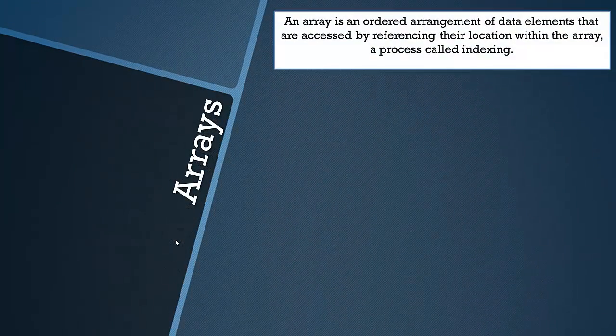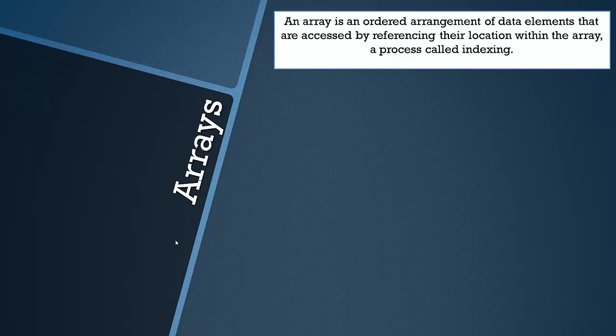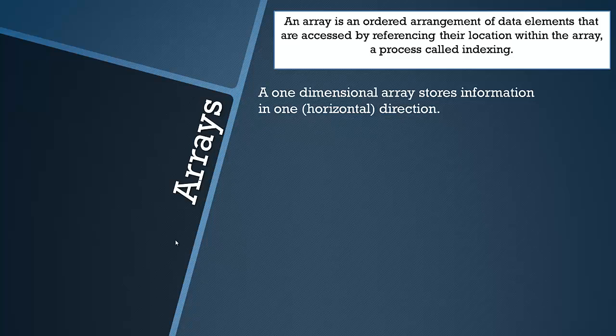Arrays would be more in the structure chapter, which I believe is next in the list, but it does touch on it in this section. An array is an ordered arrangement of data elements that are accessed by referencing their location within the array. Referencing their location is a process called indexing. A one dimensional array stores information in one horizontal direction.